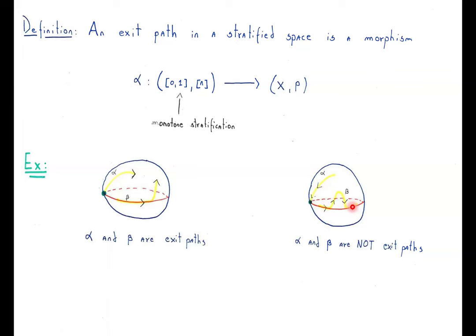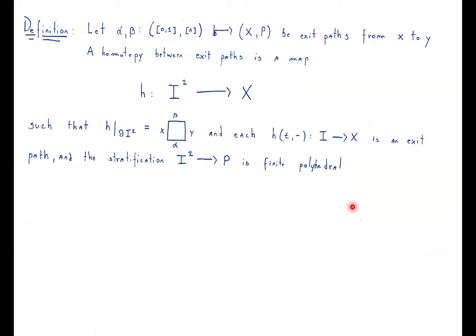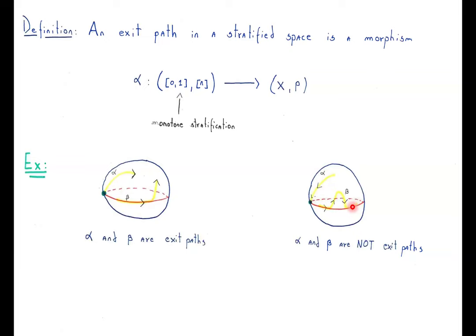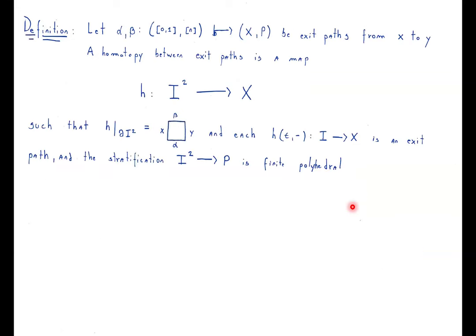Now we want to define an analog of the fundamental groupoid, so we need a notion of homotopy between exit paths. A homotopy between exit paths is a map from the product of the interval such that the restriction to the boundary is a path, and fixing one parameter gives an exit path. There is also a condition called the chain homotopy condition, which says the stratification is a finite polyhedra — a technical assumption to make things work.